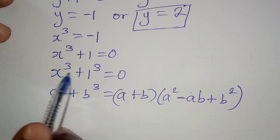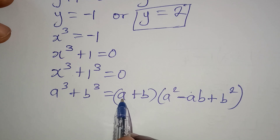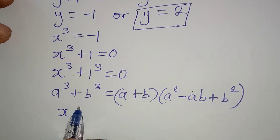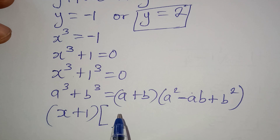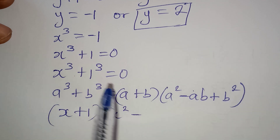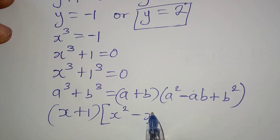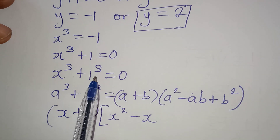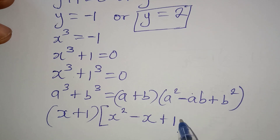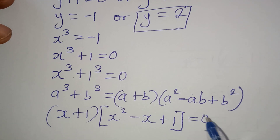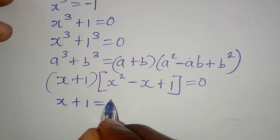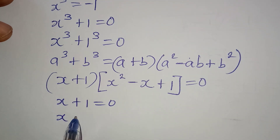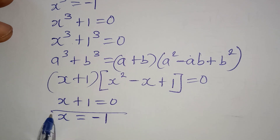I'm going to apply this same rule. In place of a plus b I'll have (x + 1) in one bracket, and in the other bracket a squared gives x squared, minus ab gives minus x times 1 which is minus x, then b squared gives plus 1 squared which is plus 1. So we have (x + 1)(x² - x + 1) equal to 0. This means x plus 1 equals 0, giving x equals minus 1. That is one of the roots.